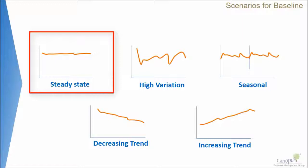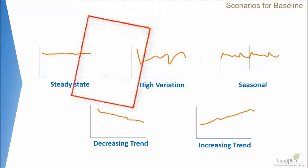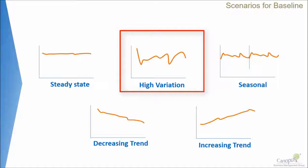The first scenario, a steady state scenario, is the simplest of all, where the process is in steady state and variation is not very high. Conveniently, even if we take three months of data and establish that as the baseline performance of the process, that would not be incorrect at all.